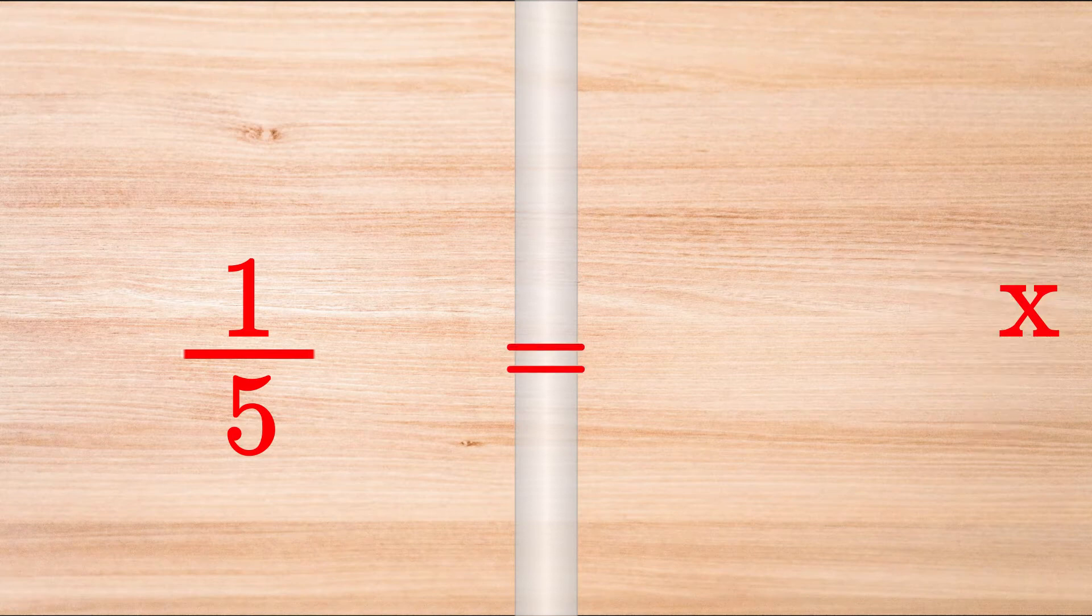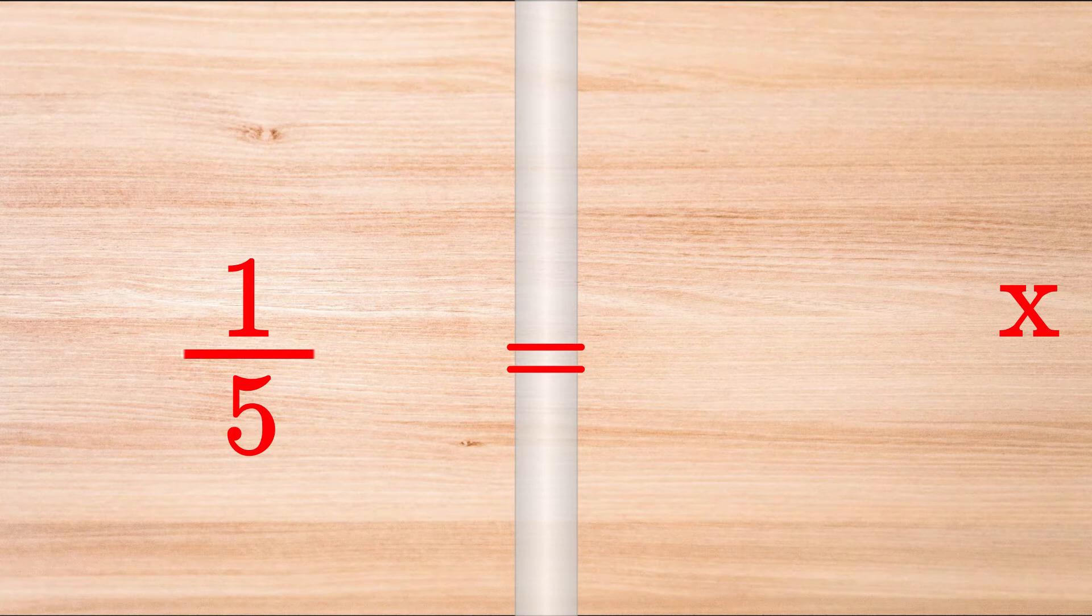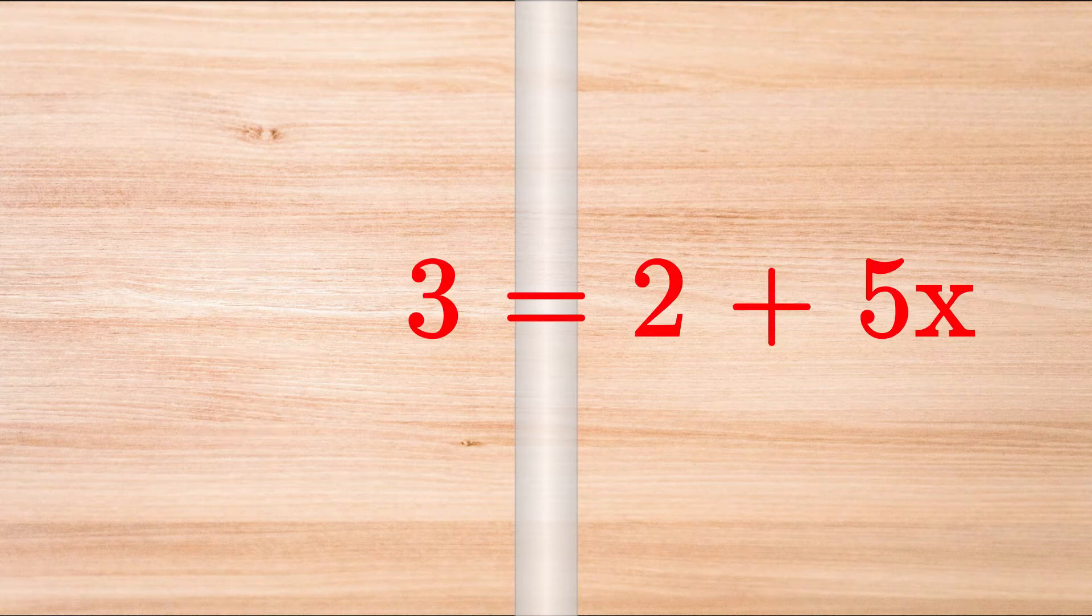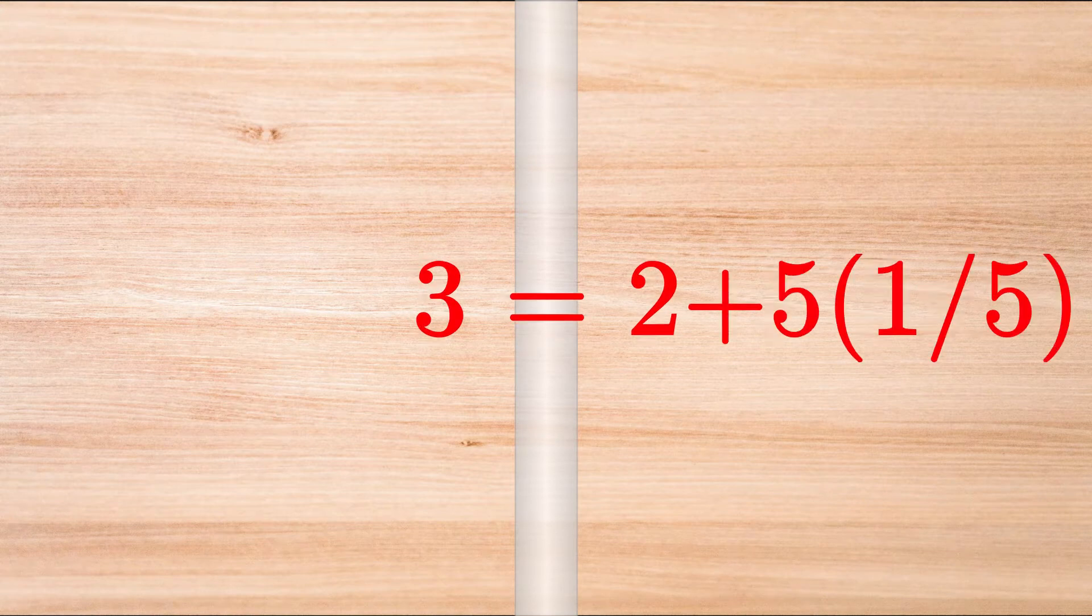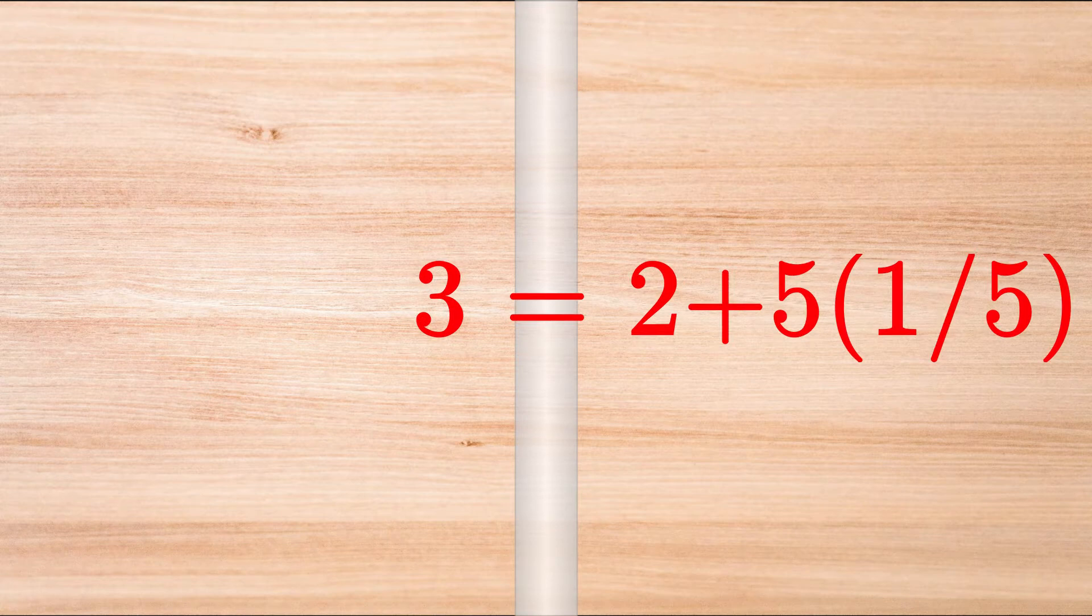And that's it! We found the secret value of X, which is 1 fifth. And we can see that 1 fifth is truly the value of X, since 3 does equal 2 plus 5 times 1 fifth. Let's work through a few examples.